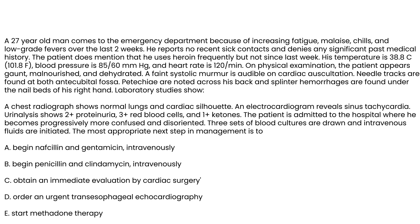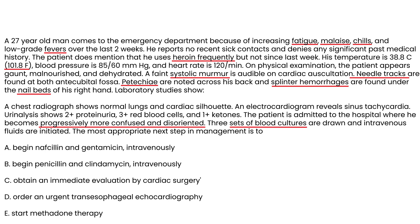Clinical vignette one: a 27-year-old man comes to the ED with increasing fatigue, malaise, chills, and low-grade fevers for the last two weeks. He uses heroin frequently. Temperature is 101, blood pressure 85/60, heart rate 120. Physical exam reveals a gaunt, malnourished appearance, a faint systolic murmur, needle tracks on both arms, petechiae across the back, and splinter hemorrhages under the nail beds. Three sets of cultures are drawn and the patient becomes progressively more confused.